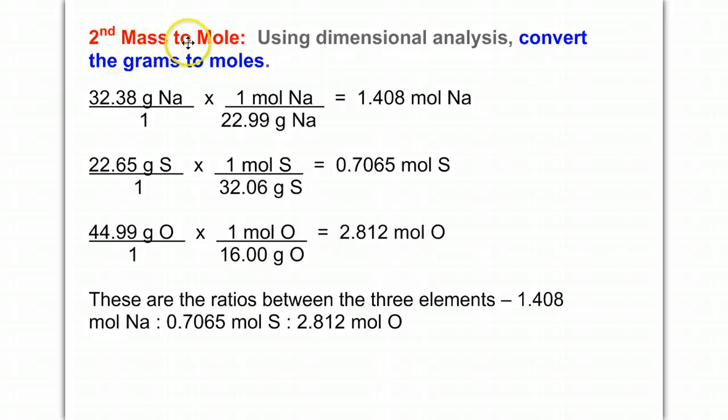The second step is change from mass to mole. You're going to use dimensional analysis and convert the grams to moles. I've put grams of sodium over one, bring down grams, go to the periodic table - the molar mass of sodium is 22.99. This equals one mole. So when you divide, you get 1.408 moles of sodium. I'm going to divide sulfur by its molar mass, and take the grams of oxygen divided by its molar mass, and that will give me the moles of oxygen.